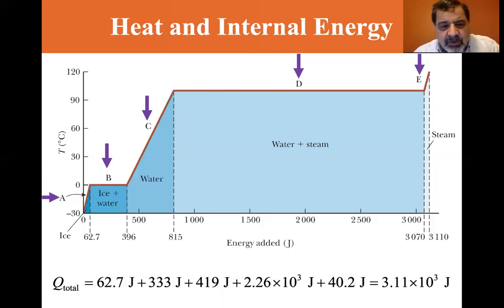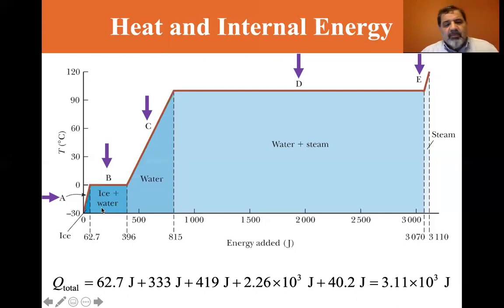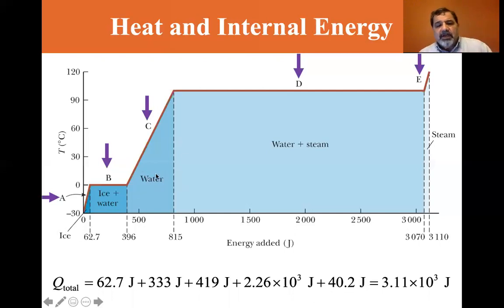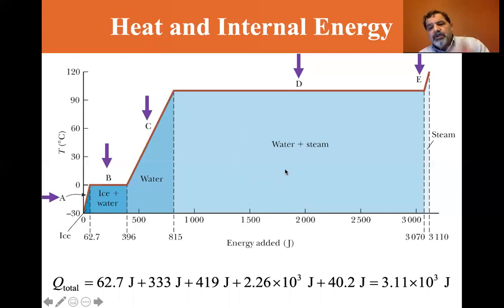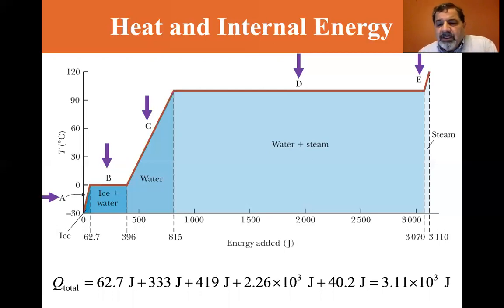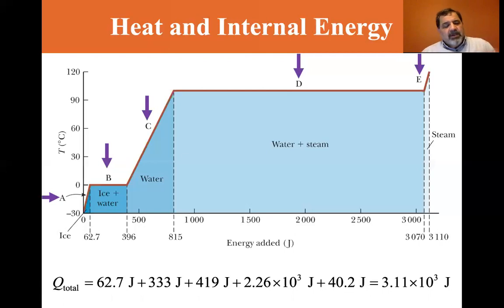Adding all the energy together: 62.7 J to raise the ice temperature, 333 J to melt the ice, 419 J to heat the water to 100°C, 2.26 × 10³ J to vaporize it to steam, and 40.2 J to raise the steam to 120°C. The total energy is 3.11 × 10³ joules — 3110 joules — to go from a one-gram cube of ice to steam at 120°C.